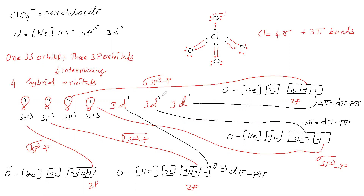All sigma bonds in perchlorate have the same sp³–p nature, and all 3 pi bonds have d-pi–p-pi nature. Chlorine undergoes sp³ hybridization, so perchlorate has a tetrahedral shape.